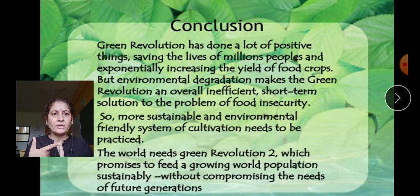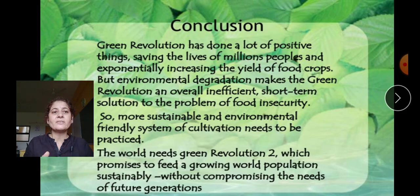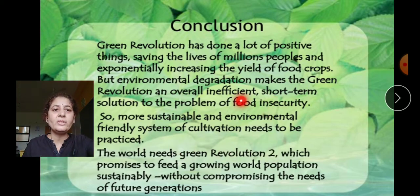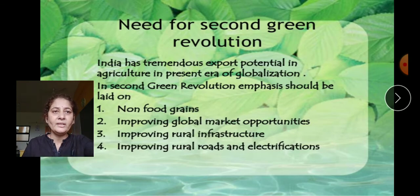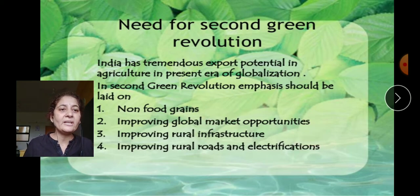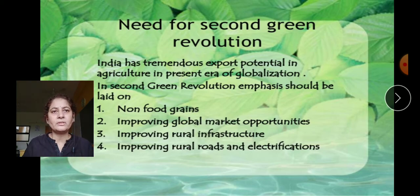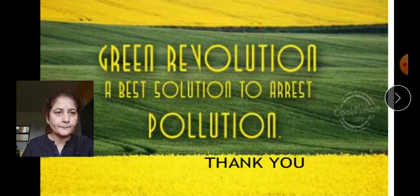The conclusion is that while the Green Revolution had many positives, we should move toward a sustainable and environmentally friendly system of cultivation — this is the need of the hour. We need a second Green Revolution focused on non-food grain improvement, global market improvement, rural infrastructure, rural roads, electrification, and organic farming for sustainability. Thank you, please provide your feedback.